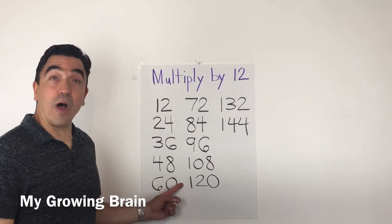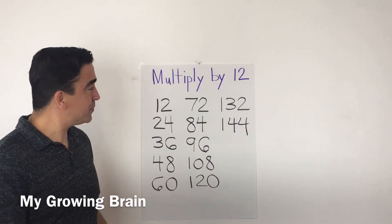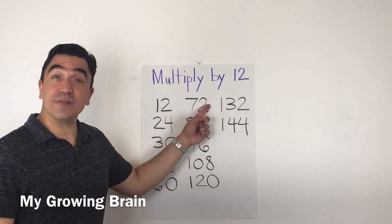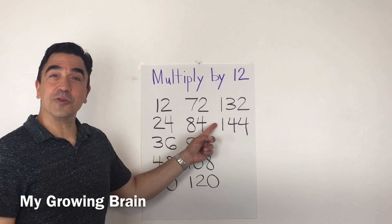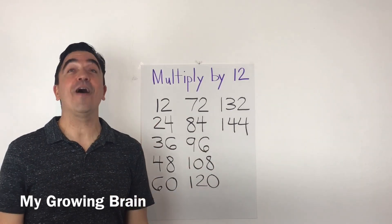12 times 10 is 120. 12 times 11 is 132. 12 times 12 is 144.